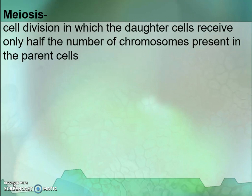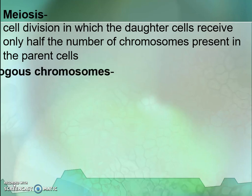Meiosis is a cell division in which the daughter cells receive only half the number of chromosomes present in the parent cell. If you are talking about the number of chromosomes, in humans we have 23 pairs, that is 46 chromosomes. So when meiosis happens, each cell is going to have 23 chromosomes.